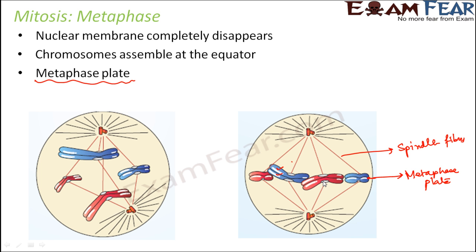The chromosomes are arranged in this fashion so that when they are pushed toward opposite poles, one sister chromatid goes to one side and the other sister chromatid goes to the other side, allowing the two sister chromatids to get separated. Why we want them to separate will be seen in the next phase.